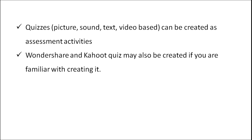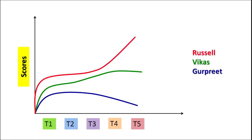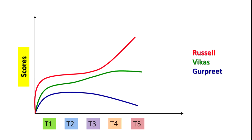We can make use of quizzes which can be picture-based, text-based or video-based. Today we also have online quizzes — Wondershare and Kahoot. A shrewd teacher would be very shrewd in finding out the performance of his or her learners. For example, here is a chart showing the performance of three students — Russell, Vikas and Gurpreet. T1, T2, T3, T4 and T5 represent five different tests. The chart shows that Russell is showing steady progress, whereas Gurpreet has shown a progress and is now on the decline.